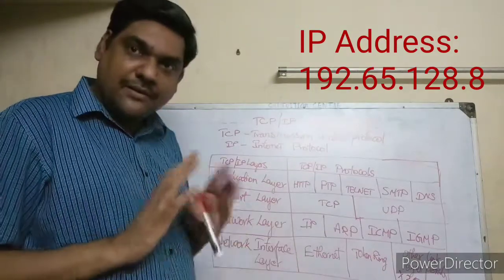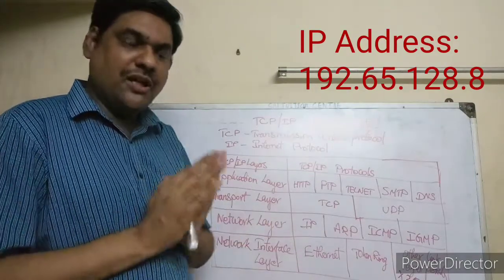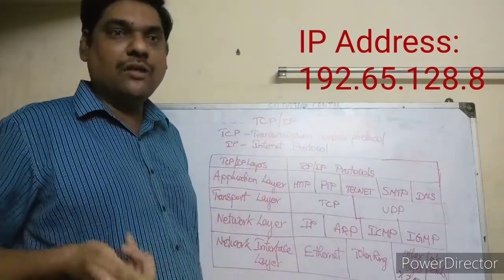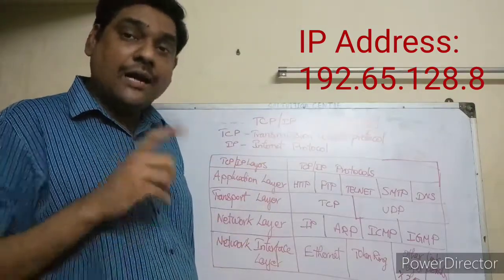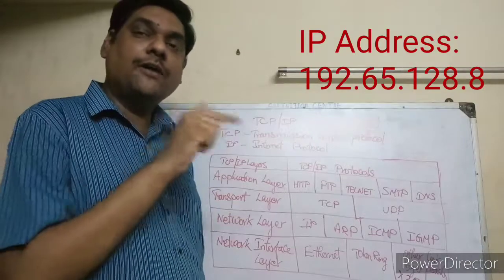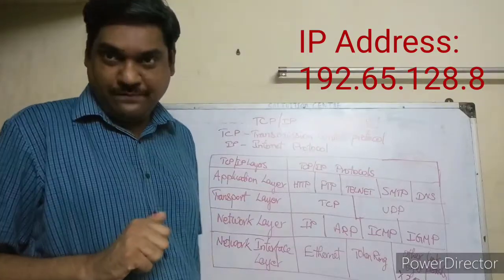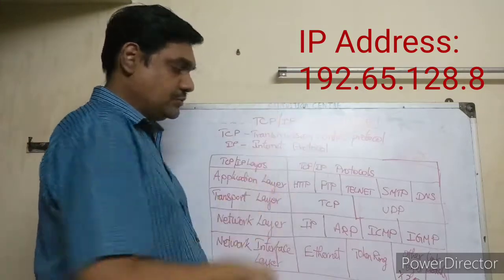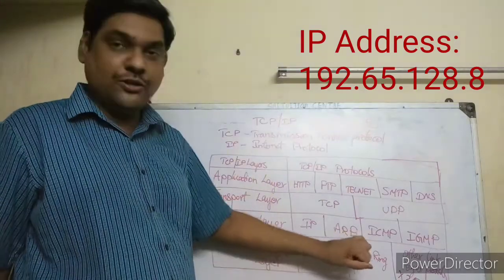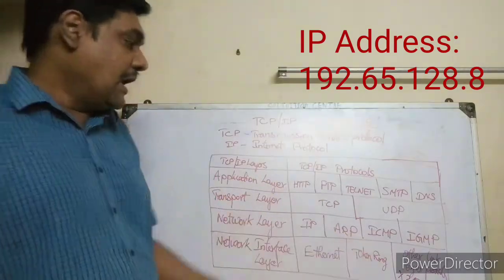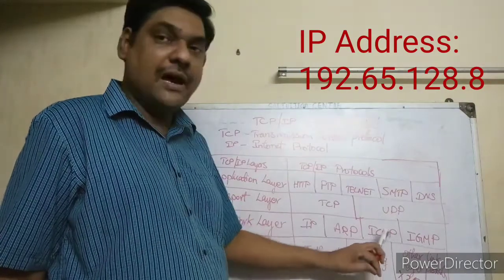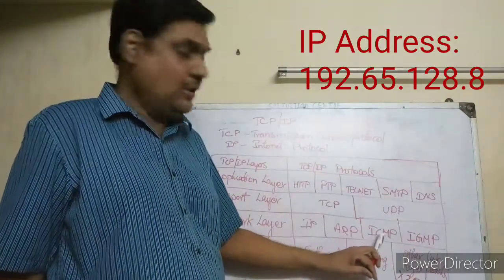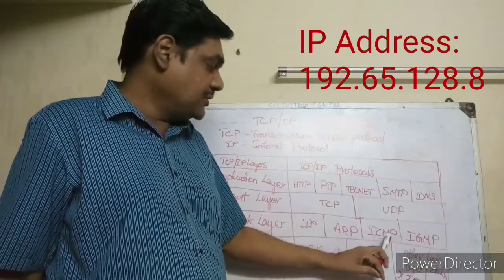ARP is used to map an IP address to a MAC address. The IP address is attached to the data, and the Address Resolution Protocol resolves the corresponding hardware address. The next protocol is ICMP — Internet Control Message Protocol.